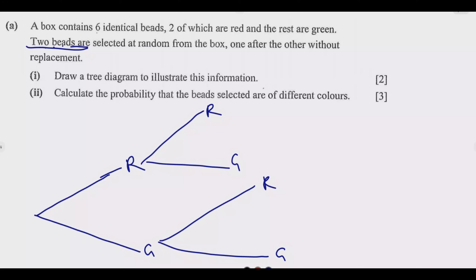We have six identical beads, two of which are red. So there's a 2 out of 6 chance of choosing red. The remaining four are green, giving a 4 out of 6 chance of choosing green on the first pick. We are choosing without replacement, so the probabilities on the second branch will change.